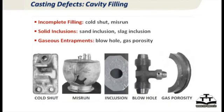Filling has three kinds of issues. First, if the mold is not filled completely at all, you get cold shut and misrun. Second, if it has filled completely but contains solid particles that should not be there — like slag or sand in sand molding — those are inclusions. Third, gaseous entrapments — essentially discontinuities — where small holes are gas porosity and big holes are blowholes. These two should not be present.